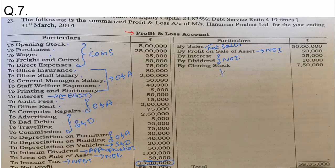Last — closing stock. Closing stock is a part of COGS. Done. Question clarity achieved — everyone understood the question clearly. Once you understand the question, the solution becomes easy.